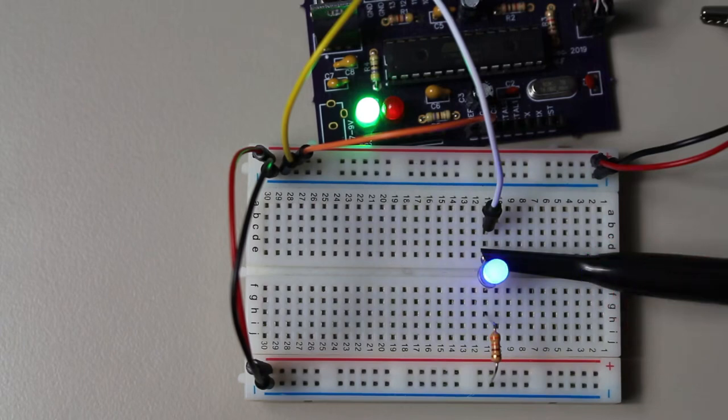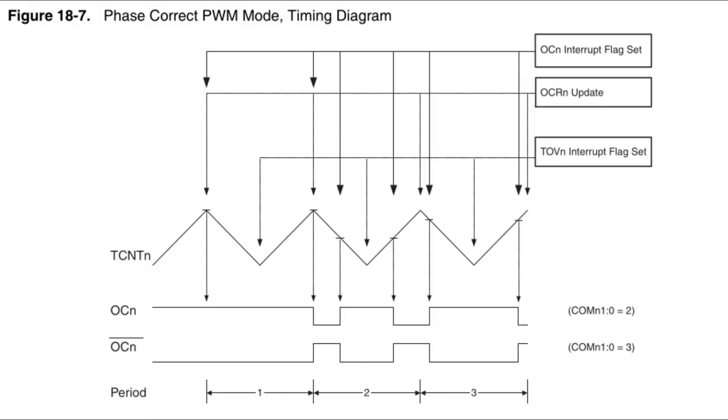Now what about Phase Correct PWM mode makes it different from Fast PWM? Well, the main difference is that instead of counting just up, the timer alternates between counting up and then counting down. When the timer reaches the compare value, it does one of two things. If the timer is counting up, the pin will go low, and during down counting, it will instead go high. You may be asking why there are two different PWM methods, and when to use each one.